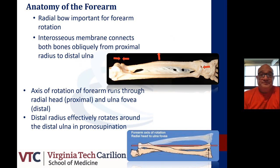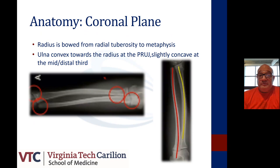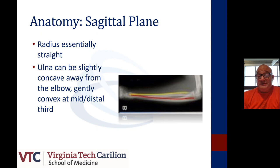The anatomy of the forearm in the coronal plane consists of the radial bow, where the radius is bowed from the radial tuberosity to the metaphysis. The ulna is convex towards the radius at the proximal radioulnar joint, and slightly concave at the mid to distal third. In the sagittal plane, the radius is essentially straight. The ulna can be slightly concave away from the elbow, but gently convex at the mid to distal third.